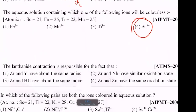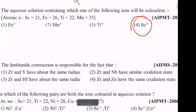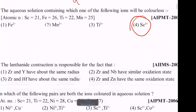The lanthanide contraction is responsible for the fact that zirconium and hafnium have the same radius. Option 3 is the correct answer.